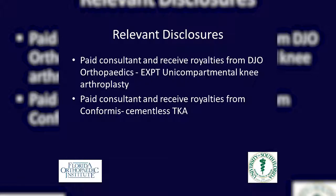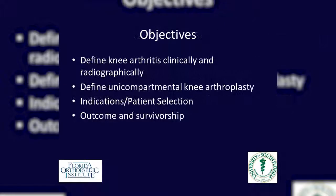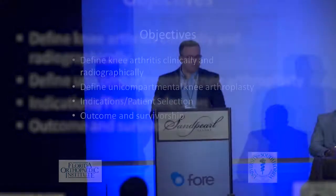These are my relevant disclosures. The objectives of the talk are to discuss knee arthritis clinically and radiographically, define what unicompartmental knee arthroplasty is and its role in reconstruction, talk about indications and patient selection — which is really the bulk of this talk — and then discuss outcomes and survivorship. With partial knee arthroplasty, probably the most important aspect of achieving good outcomes is really patient selection.